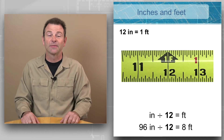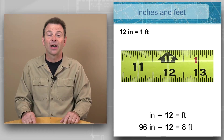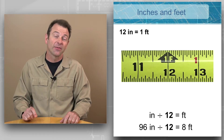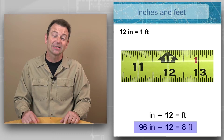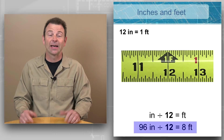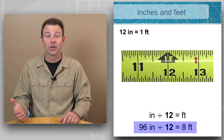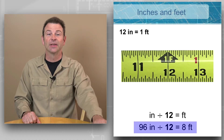Here is an example of that happening. Inches divided by 12 equals feet. So if I had 96 inches and I divide that by 12, I'm going to end up with eight feet.